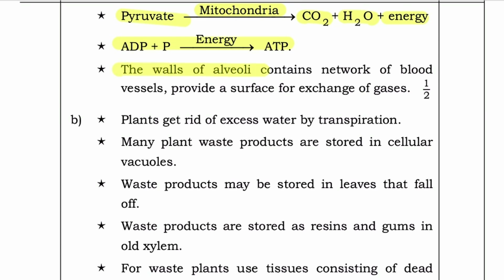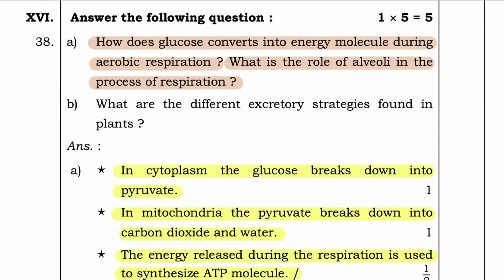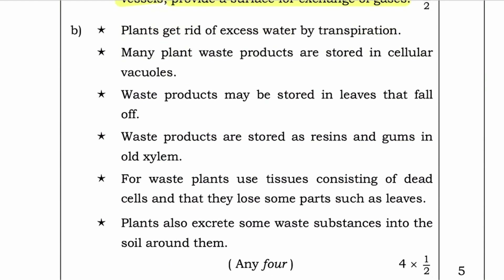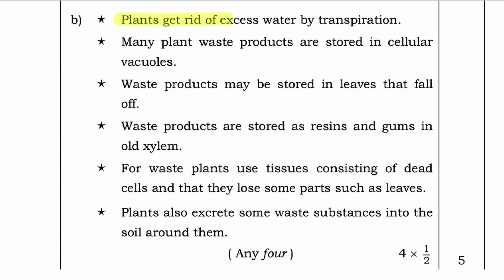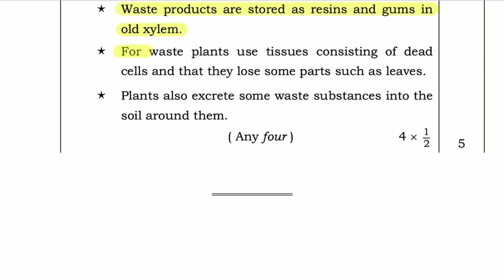The walls of alveoli with a condensed network of blood vessels provide a surface for exchange of gases. Question B: What are the different excretory strategies found in plants? Answer: Plants get rid of excess water by transpiration. Many plant waste products are stored in cellular vacuoles. Waste products may be stored in leaves that fall off. Waste products are stored as resins and gums in old xylem. Plants use tissues consisting of dead cells and they lose some parts such as leaves. Plants also excrete some waste substances into the soil around them.